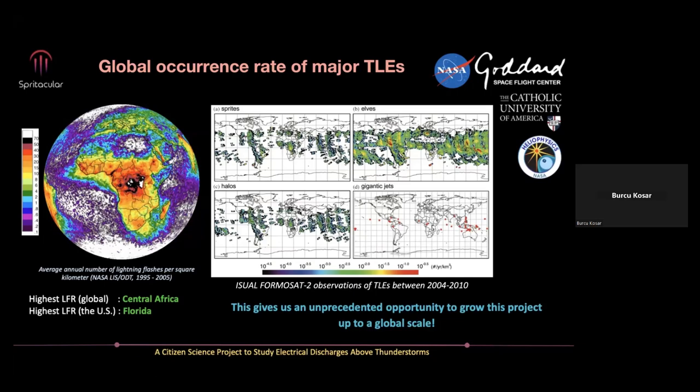Gigantic jets are pretty rare, and sprite and halo occurrence rates are pretty close together — which makes sense since halos usually accompany sprites, explaining why their occurrence rates are similar. Because lightning occurs all around the globe, we can see all different types of TLEs, and this will allow us to grow our project to a global scale if we can do outreach and communication effectively.